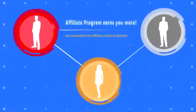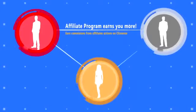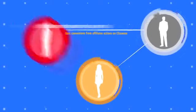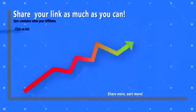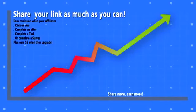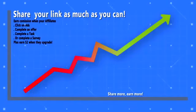Finally, one of the biggest benefits of ClickSense is our affiliate program, where you can earn commissions from the actions your affiliates complete. We pay you commissions each time your affiliate clicks on an ad, completes an offer, task, or survey. Plus, if any of your affiliates upgrade to premium, we pay you a generous two dollar commission. You'll want to advertise your affiliate link everywhere you can and give it to all your friends and co-workers.